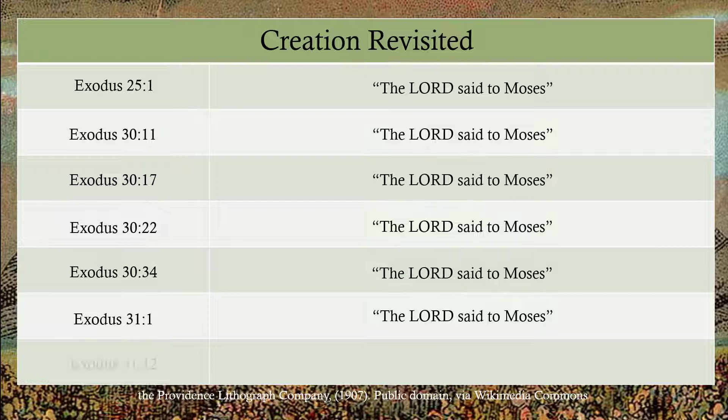Seven times this is spoken. And Exodus 31:12 — the seventh time — is instructions for the Sabbath. So just like seven days in creation, God's re-creating. It's a glaring repetition of Genesis, especially because it ends with the Sabbath. But what happens in Genesis? God creates the space. And how long does it take for Adam and Eve to ruin everything, to send it back into chaos? It doesn't take but a day. So Genesis: sin comes in. What happens when God creates the tabernacle? Very first thing — golden calf. And God is not happy.